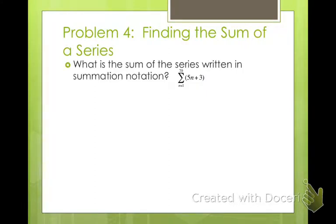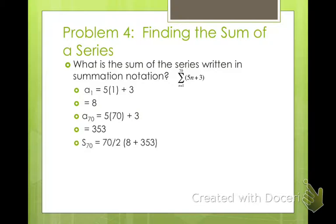What is the sum of the series written in summation notation? From n equals 1 to 70 of 5n plus 3. In order to find the sum of this, you find a sub 1 and you find a sub 70, and then you're going to use your summation notation. 5 times 1 is 5 plus 3 is 8, and then plug in 70. 5 times 70 plus 3 is 353. We know our first term and last term. To find our summation, we plug that into our formula. There are 70 terms, so 70 divided by 2 times 8 plus 353. You simplify that, you get 12,635. That's a lot of numbers.